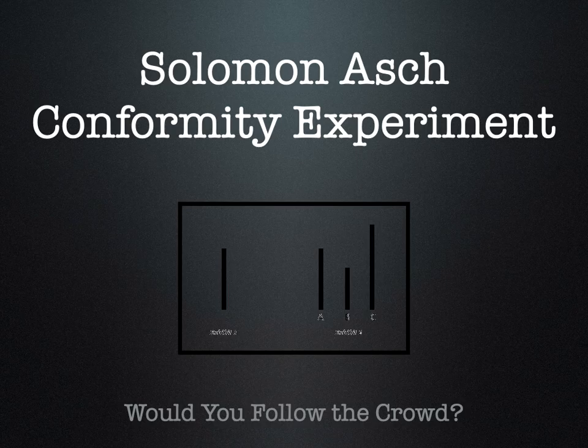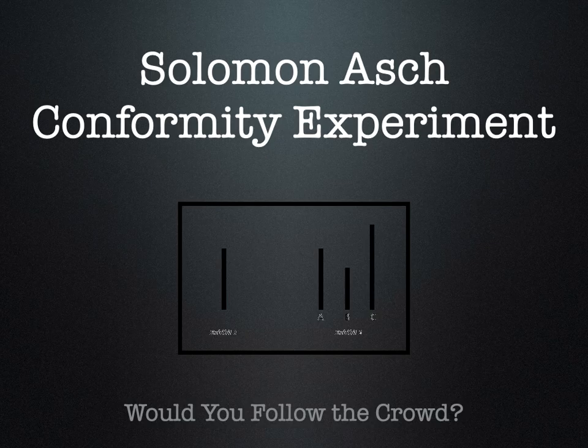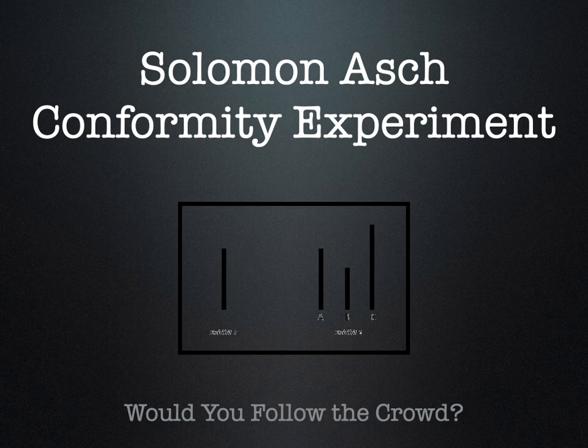The first one is the Solomon Asch Conformity Experiment. If you take a look at the picture on the screen, that's actually going to show up on the exam. This picture is really what this experiment is all about. Conformity means that you are following the crowd — you're doing what other people are doing. With the Solomon Asch Conformity Experiment, he wanted to put people in a position and see if they would do something because other people were doing it.